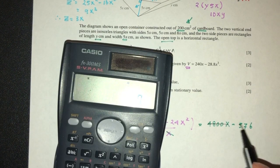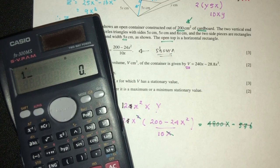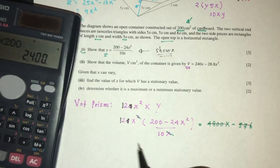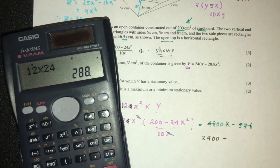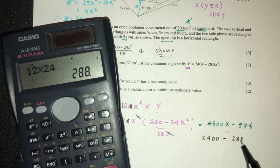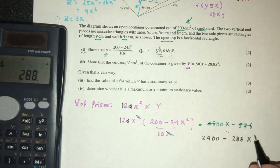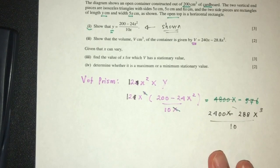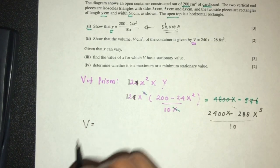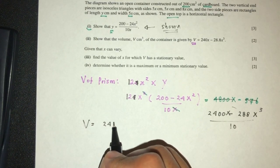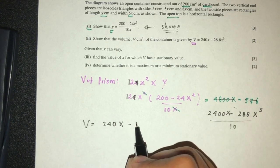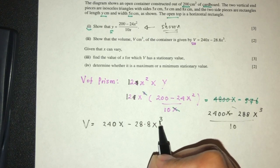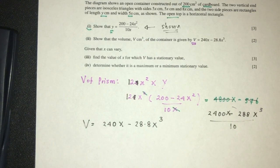So let me try that again. This is not right. So 12 times 200, that should be 2400x minus 12 times 24 should be 288x cube. Here we have x, we're missing, divided by 10. So finally, we confirm that V has to be 240x minus 28.8x cube. That is the volume of the prism.